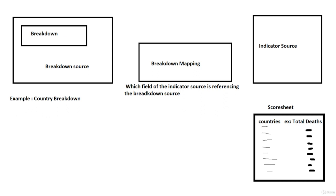Now, how can we get the result for all countries? For that, we have to create a breakdown — in our case, a country breakdown. The most important part when you create a breakdown is the breakdown source; that's where you actually get the breakdown. When you create a breakdown, there are not too many parameters — you just give it a name and then mainly focus on the breakdown source.